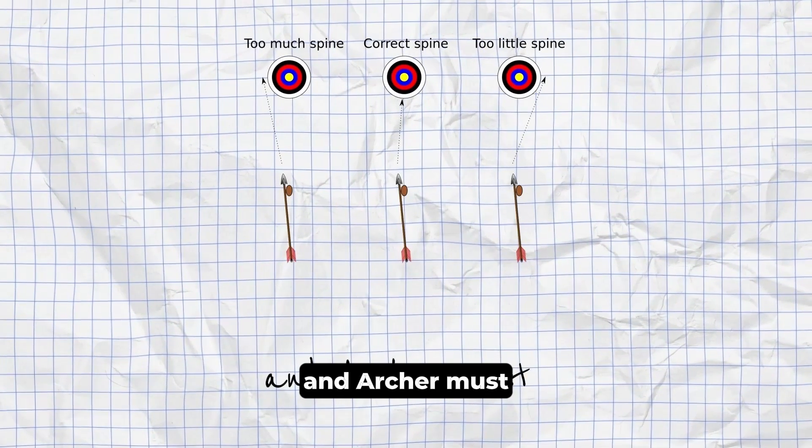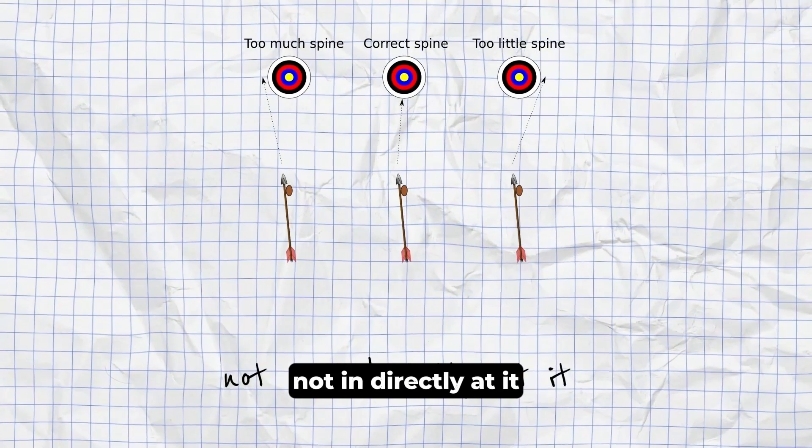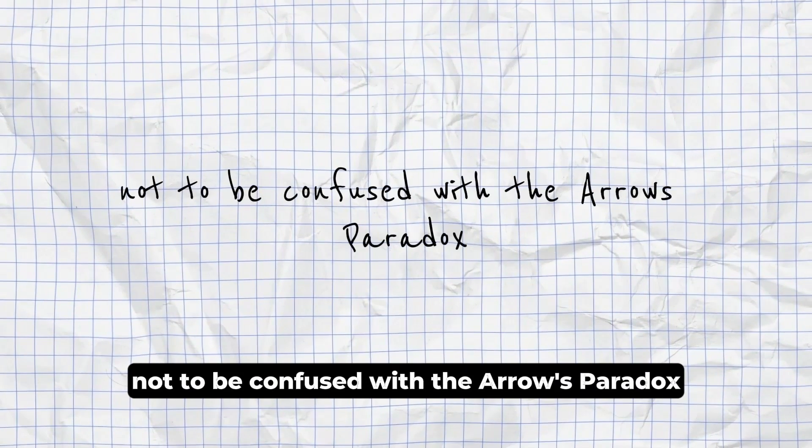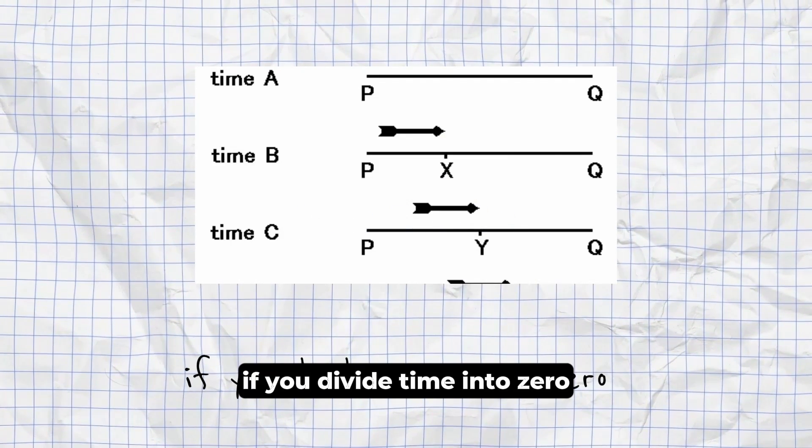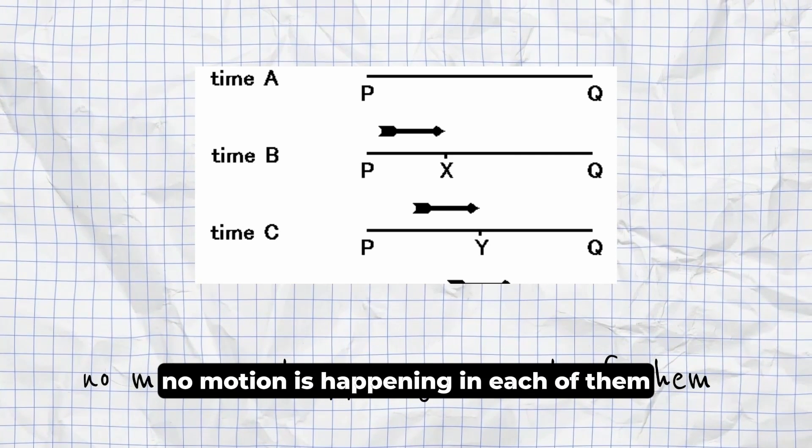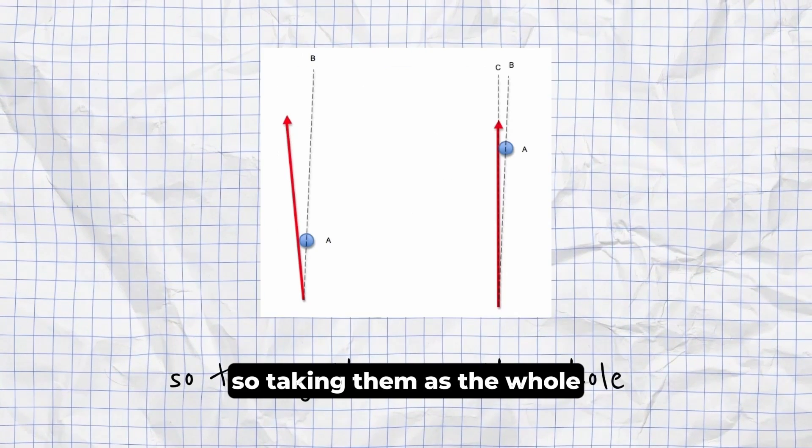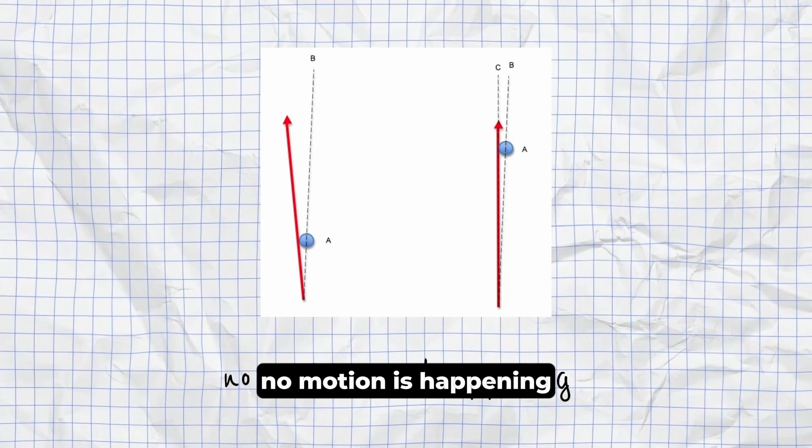Archer's Paradox. An archer must, in order to hit his target, not aim directly at it, but slightly to the side. Not to be confused with the Arrow Paradox. Arrow Paradox. If you divide time into zero duration slices, no motion is happening in each of them. So taking them as the whole, no motion is happening.